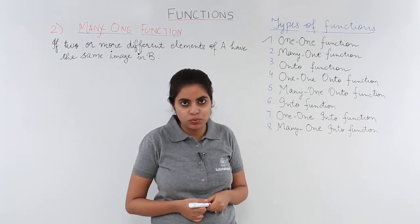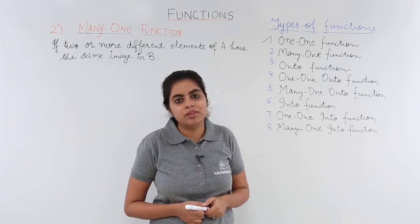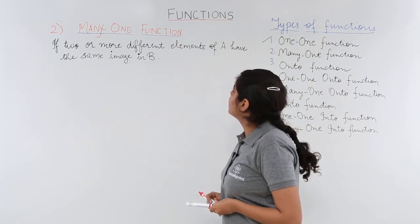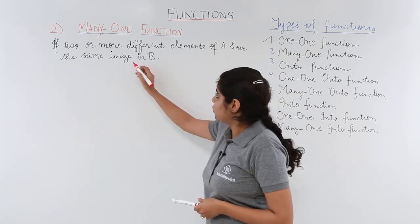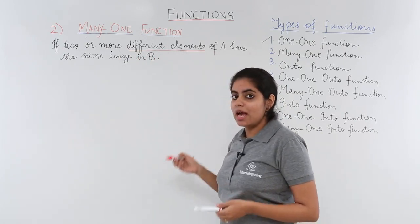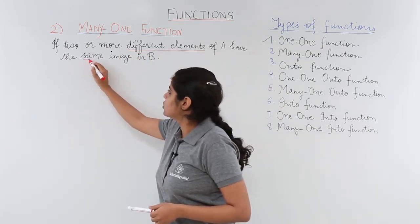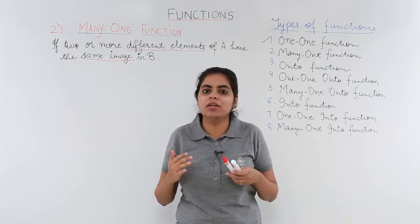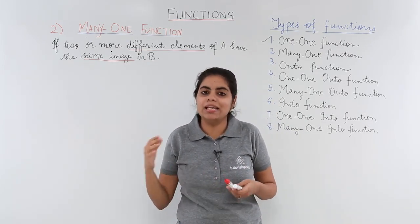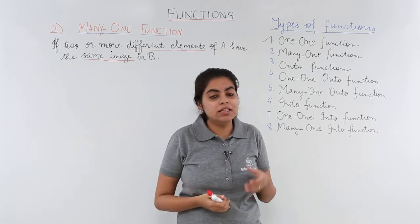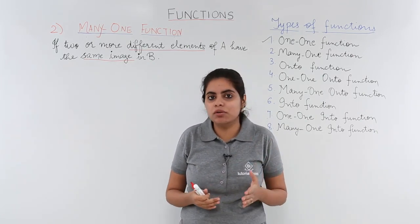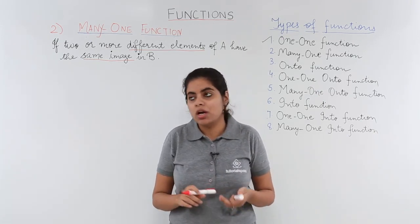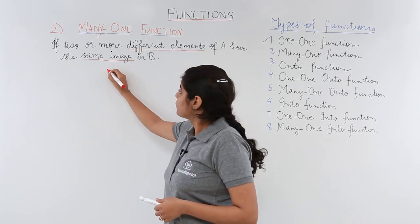Many-one function: if two or more different elements of A have the same image, then it is a many-one function. That means if there are two sets A and B, and the elements of A and elements of B are enlisted, considering that different elements of A have the same image in B, then it is a many-one function.